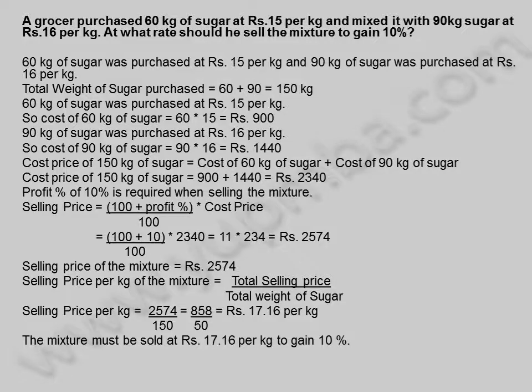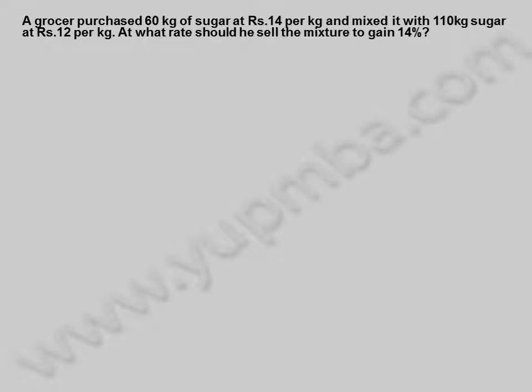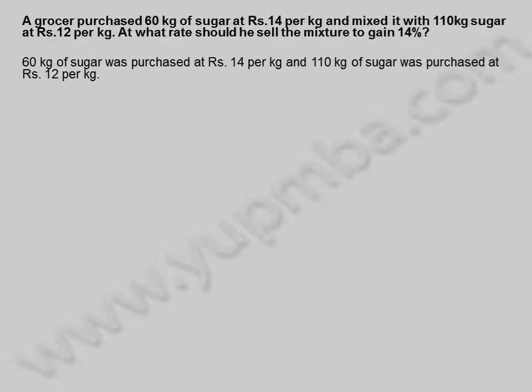Let us see another example. A grocer purchased 60 kilograms of sugar at 14 rupees per kilogram and mixed it with 110 kilograms of sugar at 12 rupees per kilogram. At what rate should he sell the mixture to gain 14 percent? 60 kilograms of sugar was purchased at 14 rupees per kilogram and 110 kilograms was purchased at 12 rupees per kilogram. Total weight of sugar purchased is equal to 60 plus 110, which equals 170 kilograms.